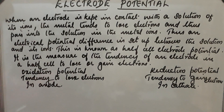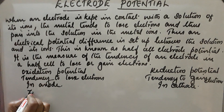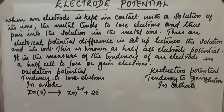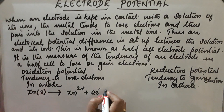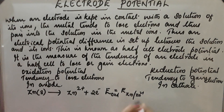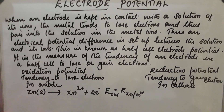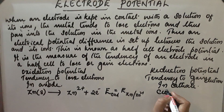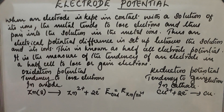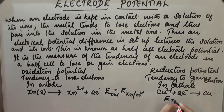Oxidation potential is obtained at zinc metal: Zn gives Zn²⁺ and two electrons; the Zn²⁺ moves into the solution. So oxidation potential is the potential obtained due to the loss of electrons. In the case of reduction potential, copper gains electrons and produces copper metal. This is called reduction potential.